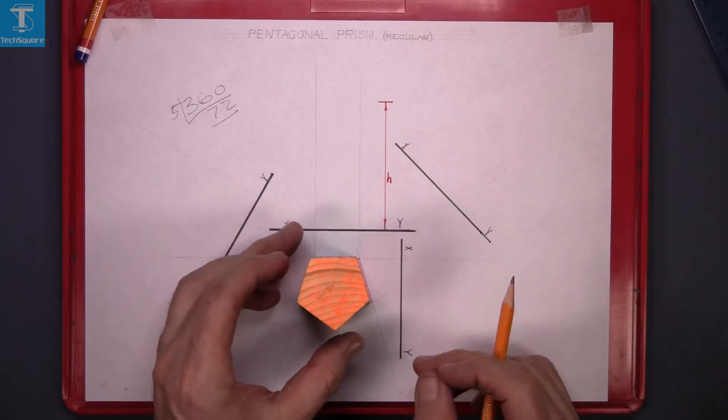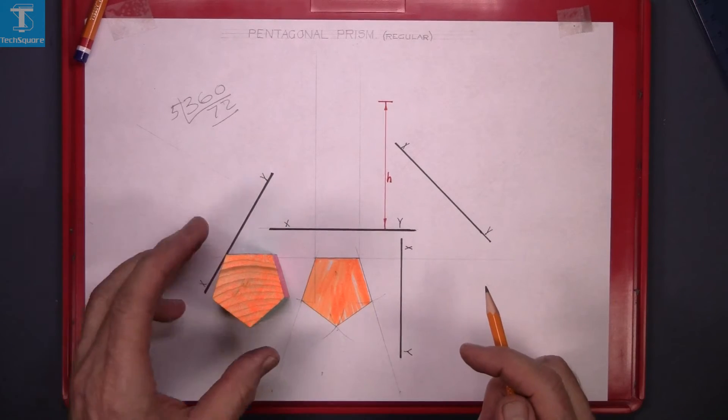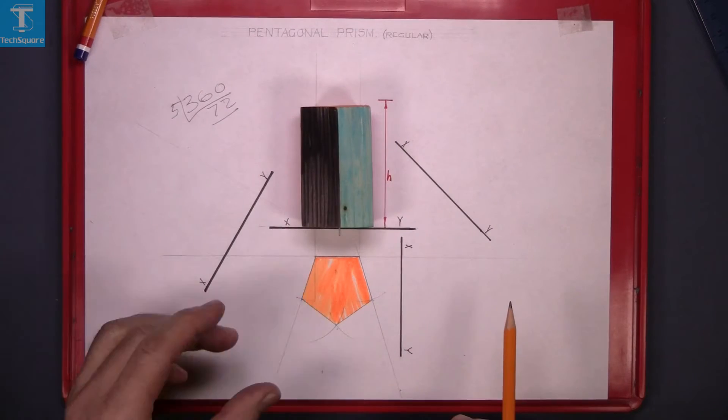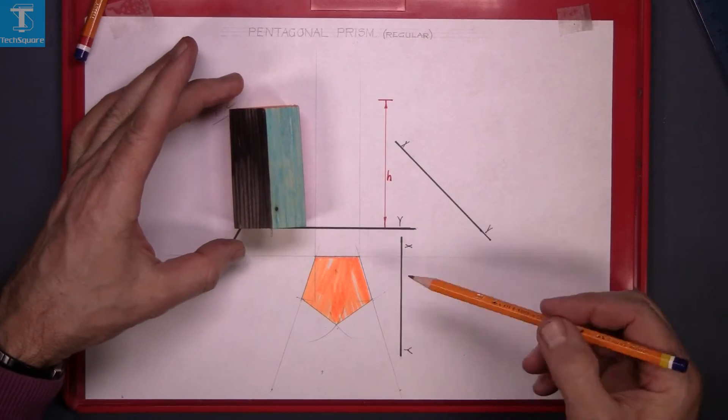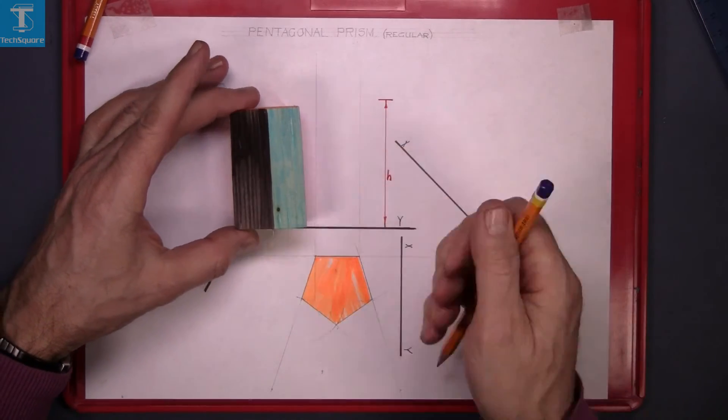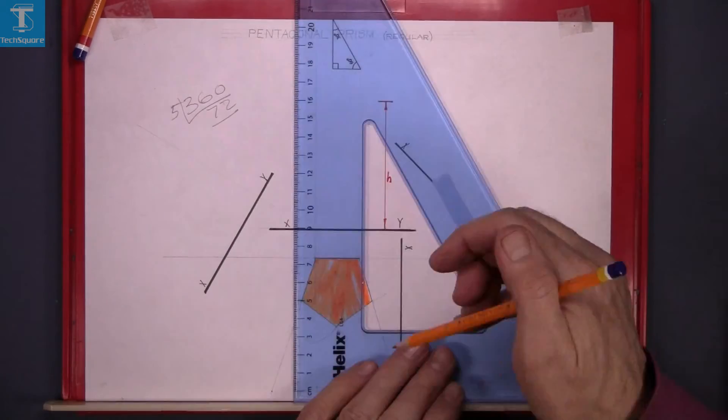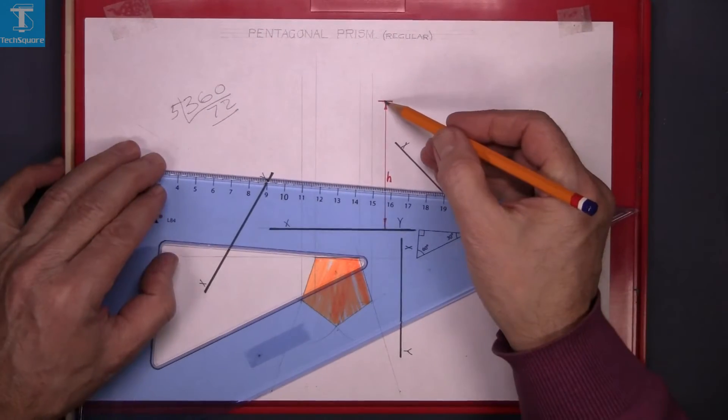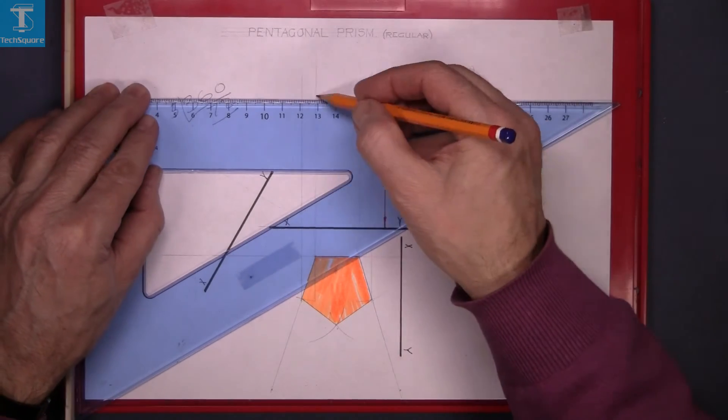Now this is the solid. We get the elevation up here. That's what the view is going to look like. So project the points up from the plan. Draw the points up. The height is the H marked as H. Draw it across the top.